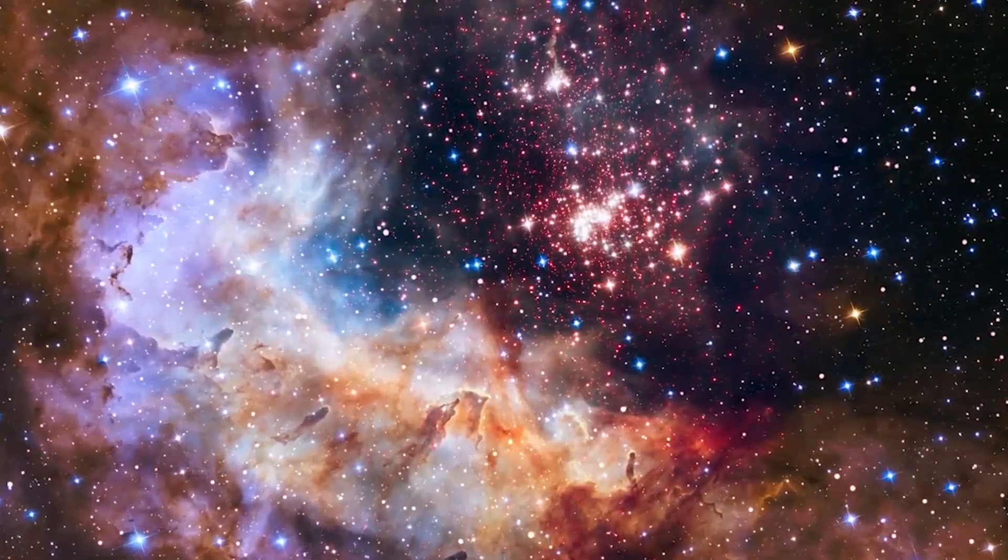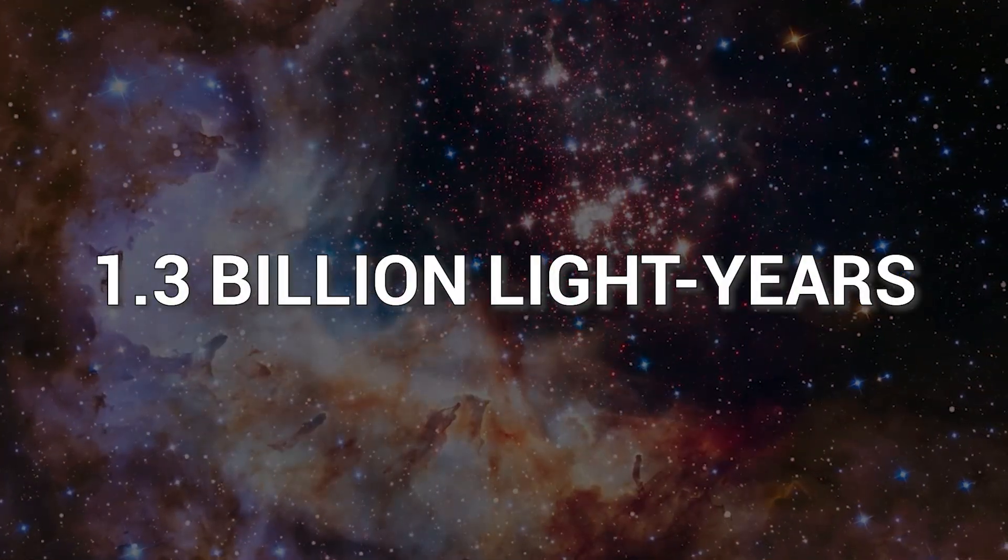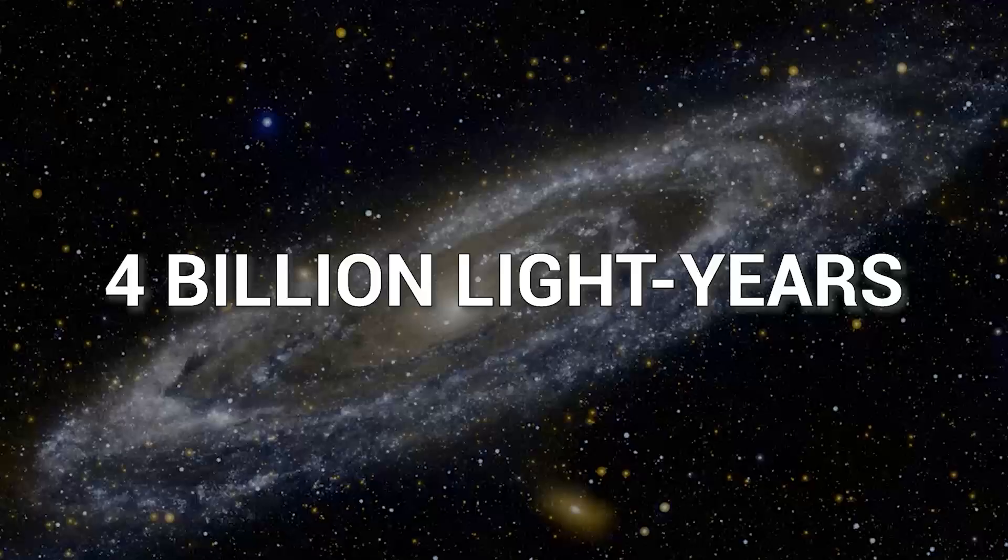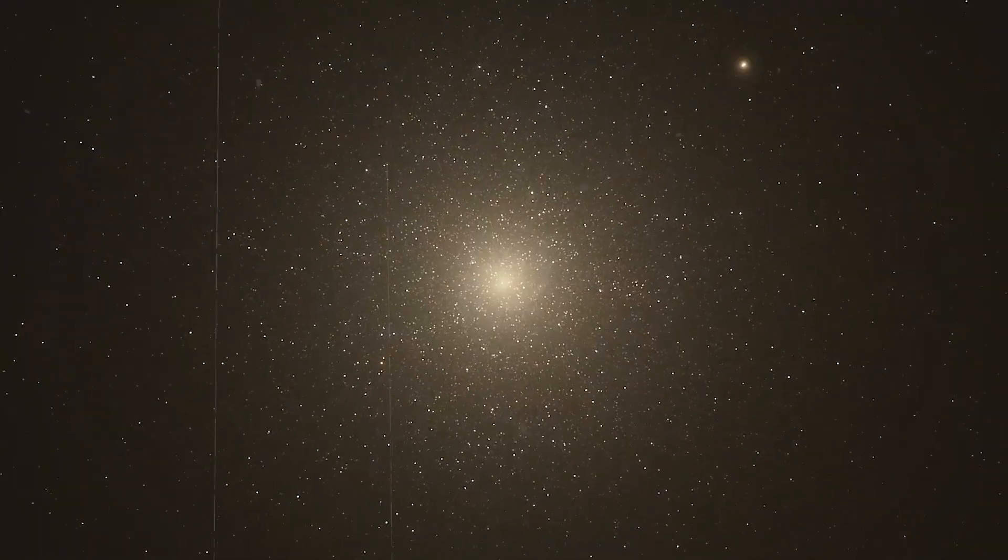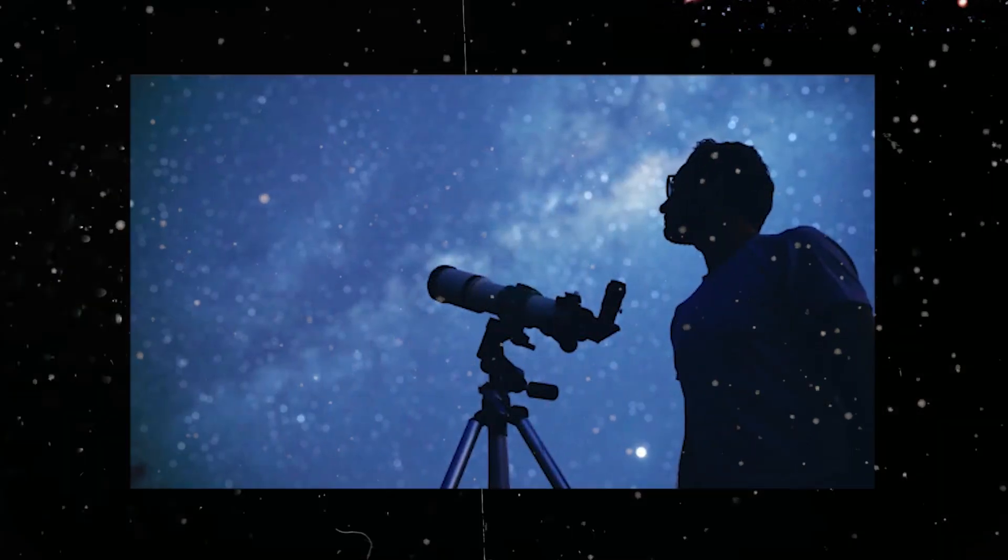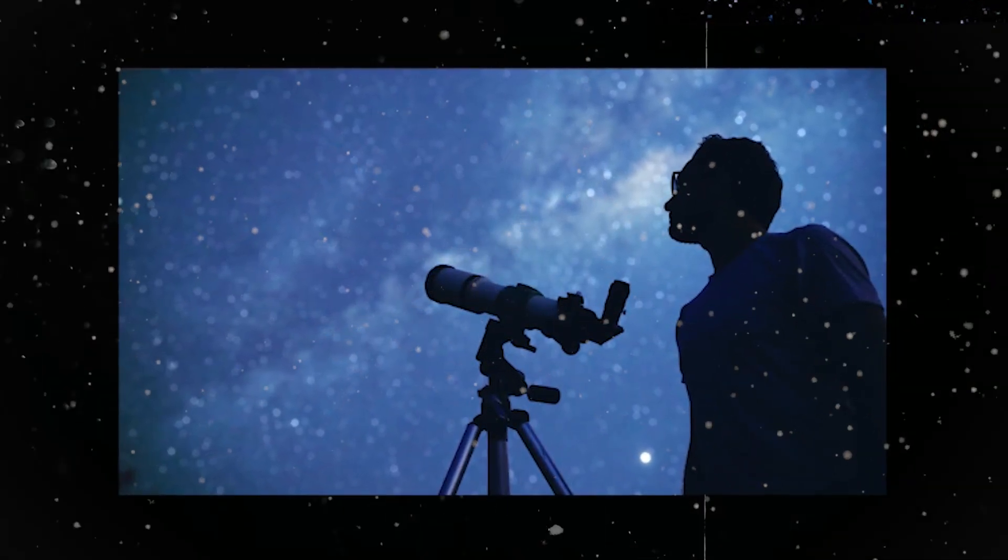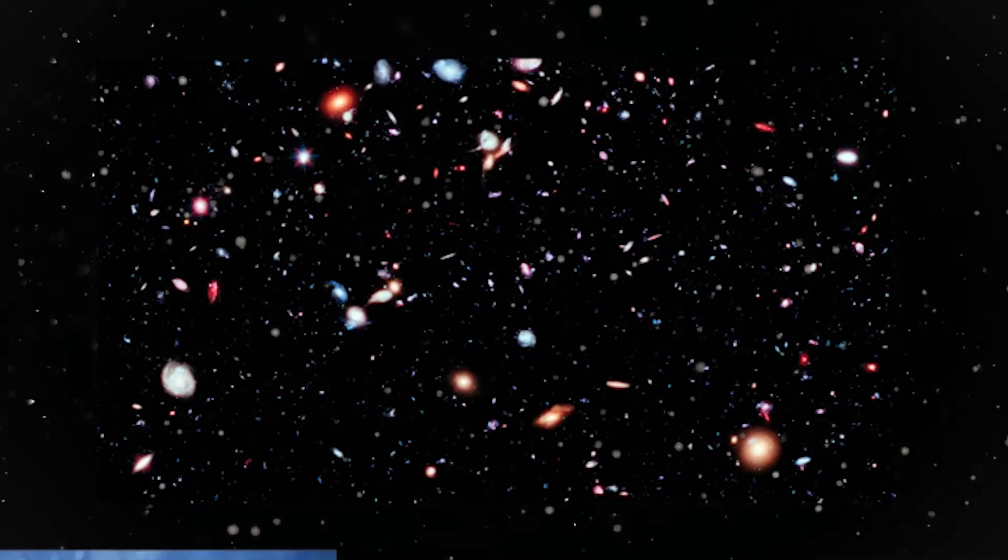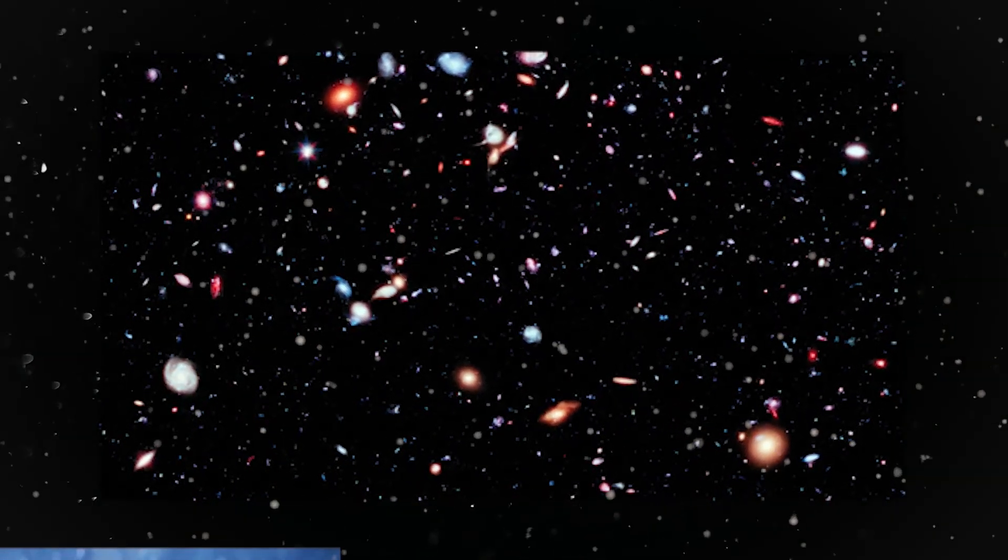This colossal superstructure spans an astounding 1.3 billion light-years in diameter with a circumference of roughly 4 billion light-years, making it one of the largest known structures in the observable universe. A gargantuan ring of galaxies and galaxy clusters aptly named the Big Ring.